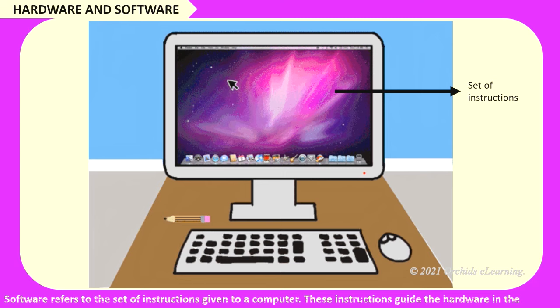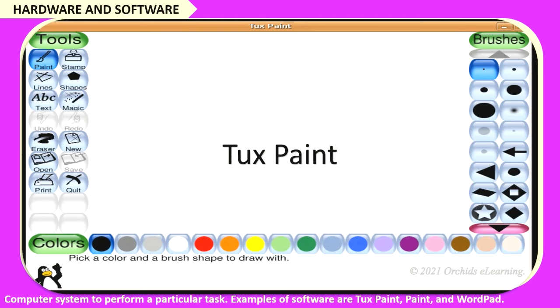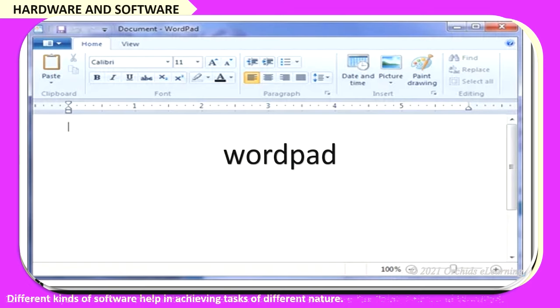Software refers to the set of instructions given to a computer. These instructions guide the hardware in the computer system to perform a particular task. Examples of software are Tux Paint, Paint, and WordPad. Different kinds of software help in achieving tasks of different nature.